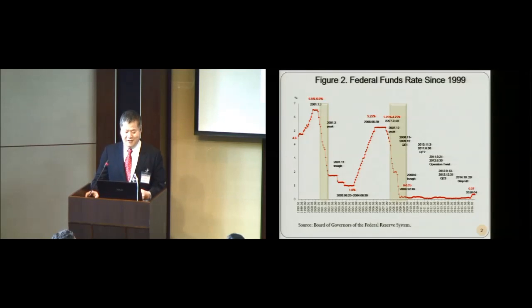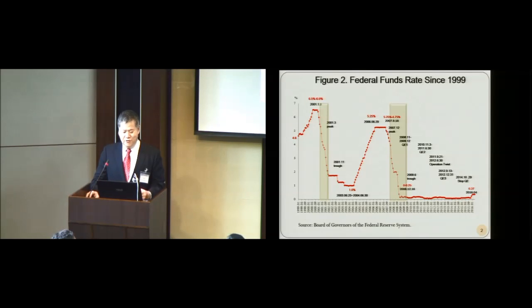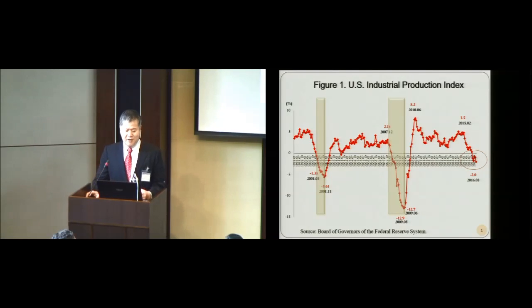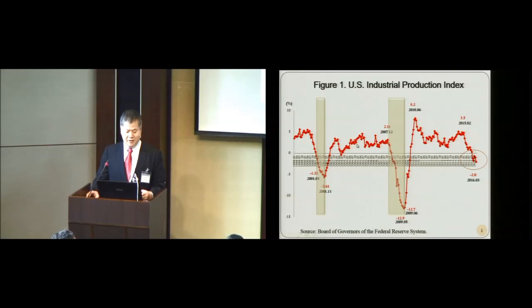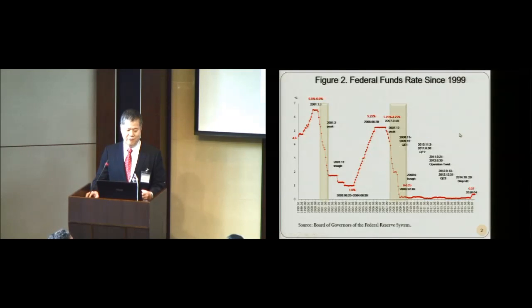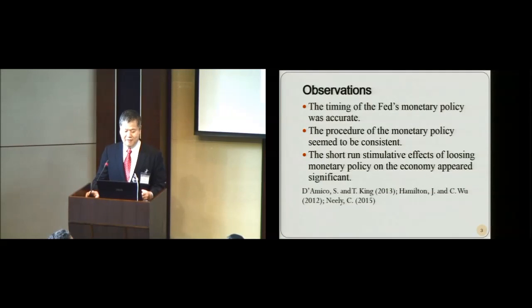During the seven years of low interest rates, the Fed also conducted supplementary monetary policies: QE1, QE2, the operation twist, QE3, and QE3 extension. If we look at the industrial production index data, after adopting quite strong monetary policy, the economy actually recovered moderately in both periods. From these two figures, we may say that the timing of the Fed's monetary policy was quite accurate, and the procedure of the monetary policy seemed to be consistent, and the short-run stimulative effects appear significant.